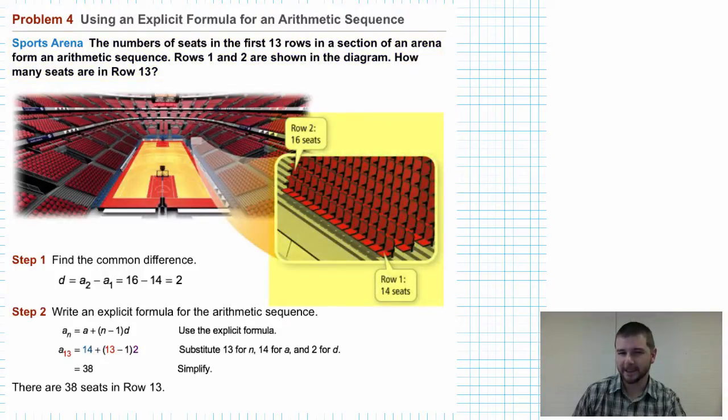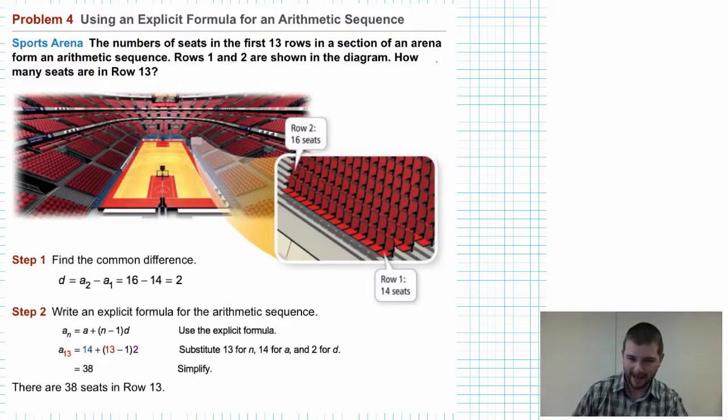Well, note row 1 has 14 seats, row 2 has 16 seats, and we're told this is an arithmetic sequence. Given that information, we can tell that our common difference is 2. So 2 would be the value we would continually add to find the next terms or the next number of seats in each row.